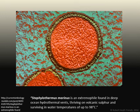The picture you see now is Staphylothermus marinus. It's an extremophile found in deep ocean hydrothermal vents, thriving on volcanic sulfur and surviving in water temperatures near the boiling point.